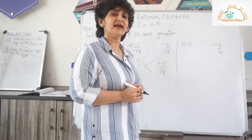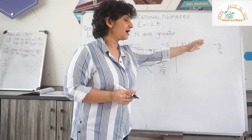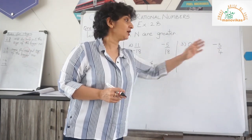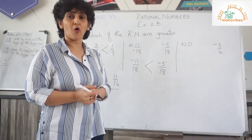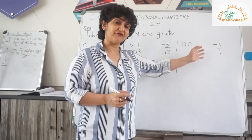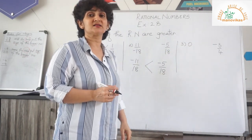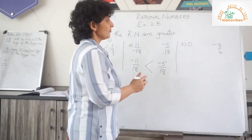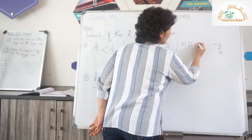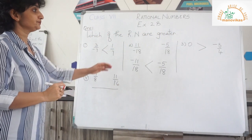The next sum: you have 0 and minus 3 upon 4. Zero is definitely greater than minus 3 upon 4. So 0 is greater.